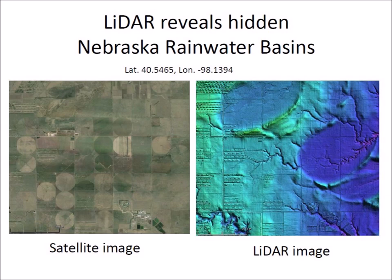The satellite image on the left shows the half-mile circular patterns created by center-pivot irrigation systems. The LiDAR image of the same area on the right reveals elliptical depressions known as Nebraska Rainwater Basins that occur south of the Platte River on the loess-covered landscape.